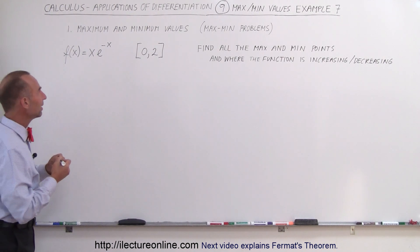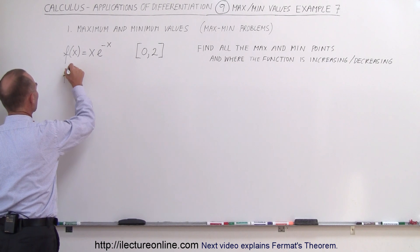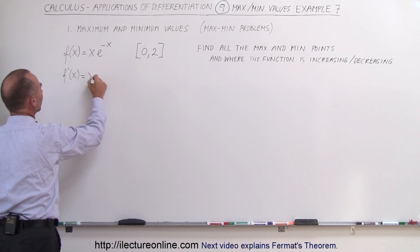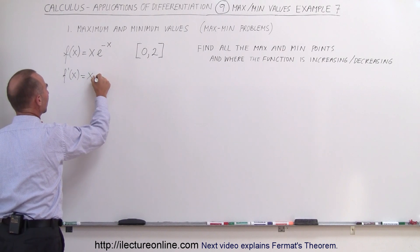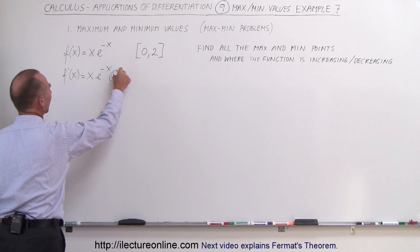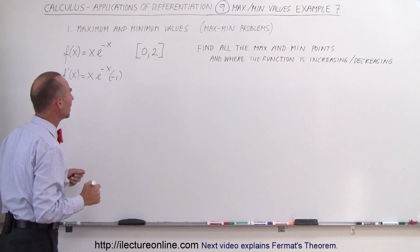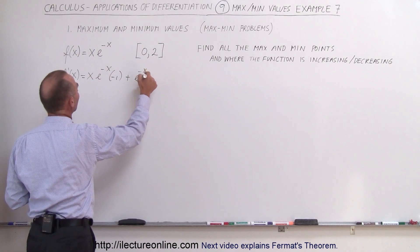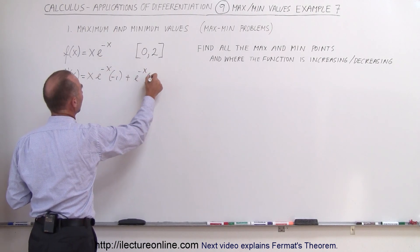Let's start by finding the derivative. f'(x) is equal to - since this is a product, we take the first times the derivative of the second, which is e^(-x) times minus 1 because we have to take the derivative of the exponent, plus the second e^(-x) times the derivative of the first, which is 1.